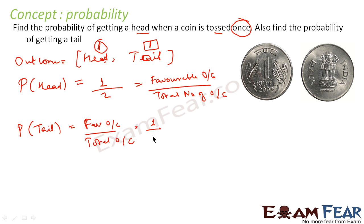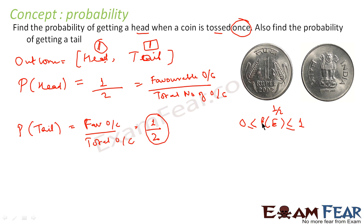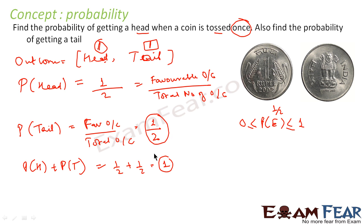We have noted that probability of any event is always greater than or equal to zero and less than or equal to one. In both cases the result is one by two, and one by two satisfies that condition. Also, we said that probability of all events — probability of head plus probability of tail — should equal one. Here one by two plus one by two equals one, so that is also true.